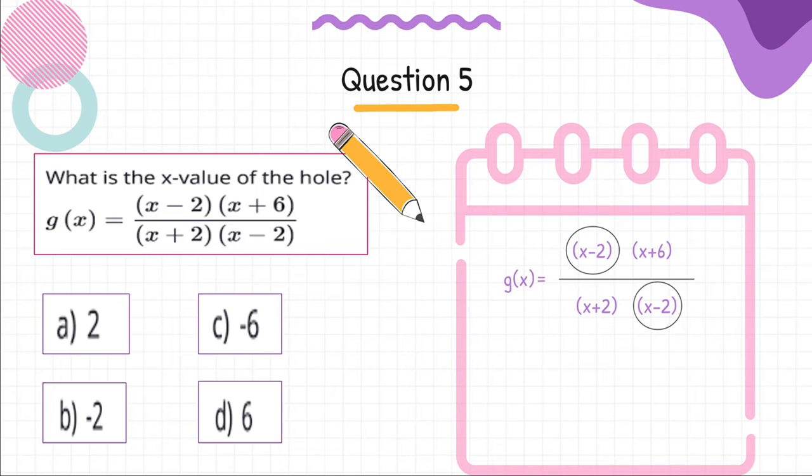Step 1: The factor x minus 2 in the denominator cancels with the factor x minus 2 in the numerator.